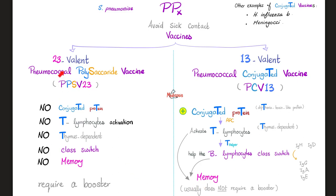In contrast, PPSV23 does not contain conjugated protein. Therefore it does not activate the T-lymphocyte — it is not thymus-dependent, or thymus-independent. No class switching, no memory cells. Therefore it usually requires a booster.